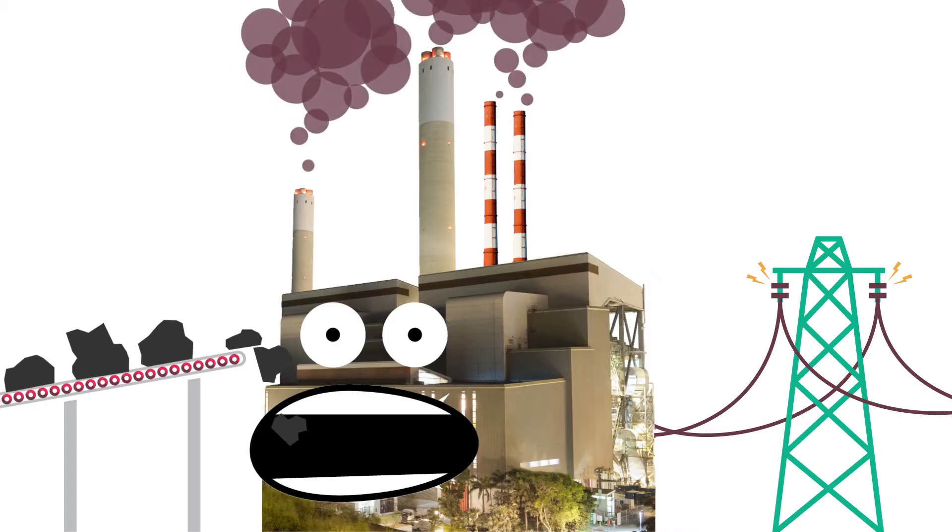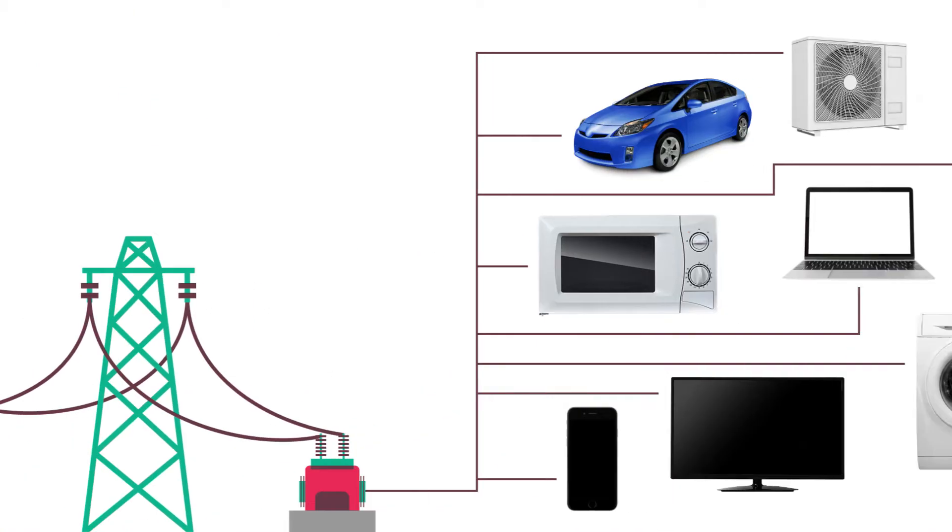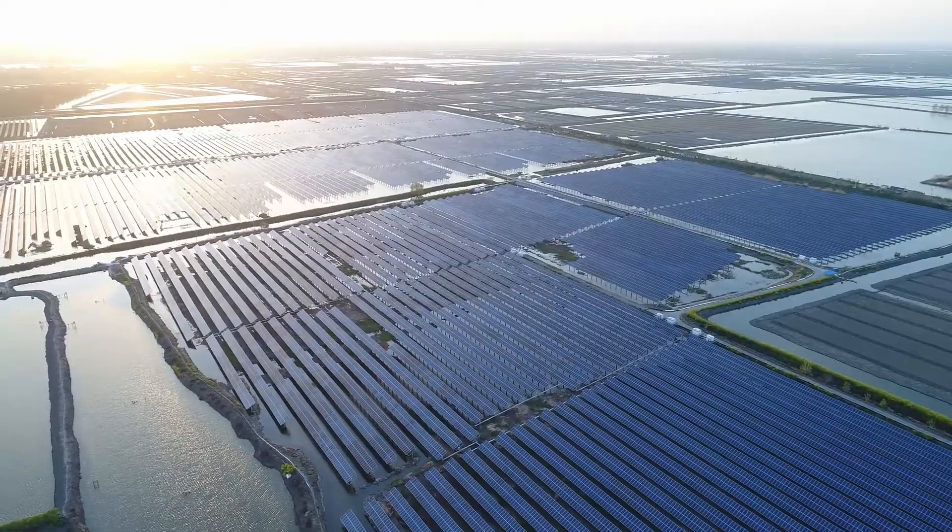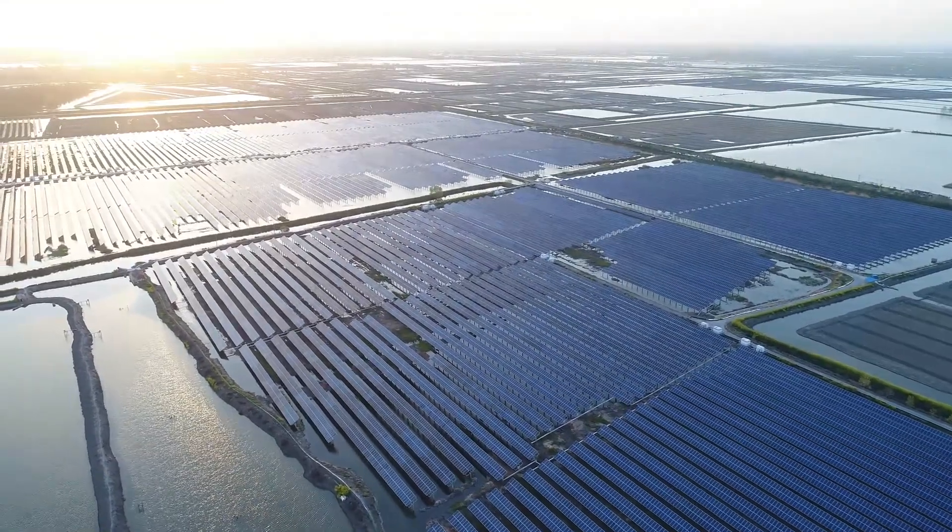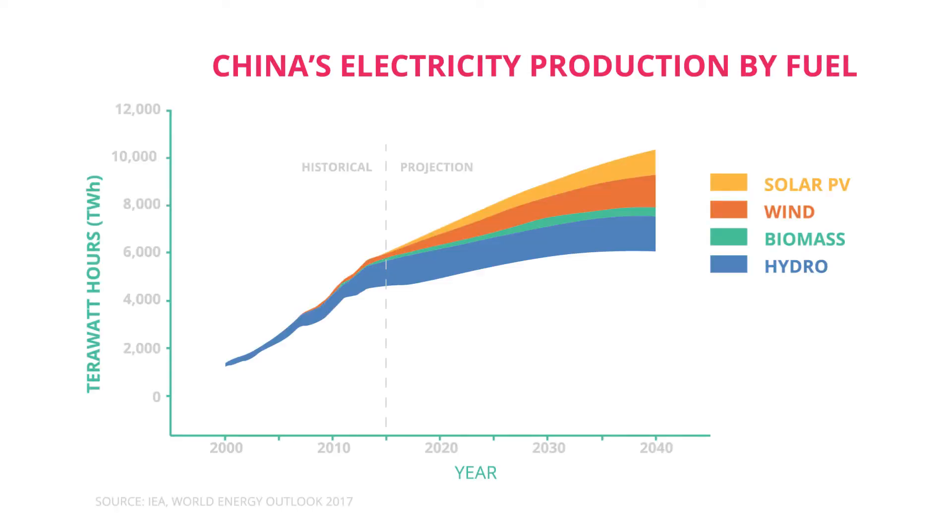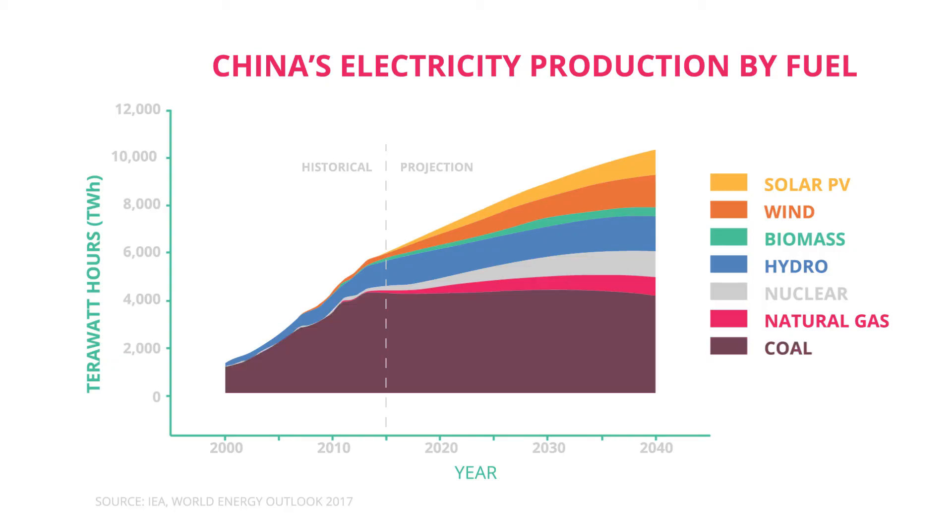For example, in China, coal is still the predominant source of energy to produce electricity. And while they have recently built some of the largest solar farms in the world, that alone simply can't keep up with their existing demands, never mind the expected increase.